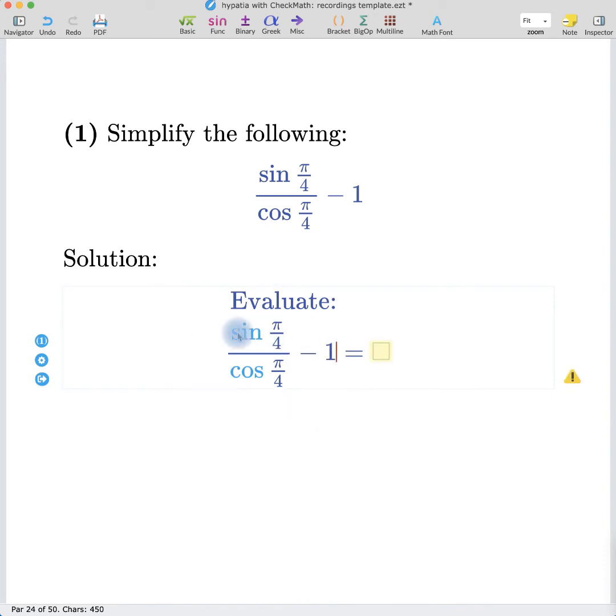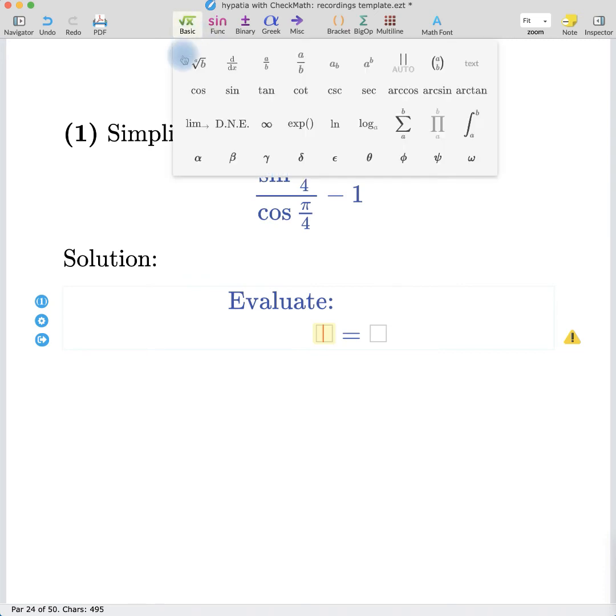However, I'm going to show you another way that we can type this expression out. So the alternative way to write math, and this way is a little bit faster than picking each symbol from the menu, is that each symbol, as you can see from the basic menu, has a keyword associated with it. So fraction, the keyword is frac, as you can see by hovering over. For sign, the keyword is sign. And so Hypatia has the ability to convert these keywords into the actual symbols.